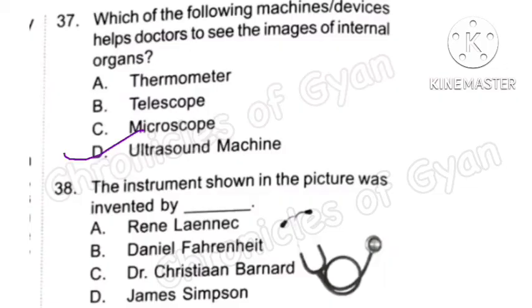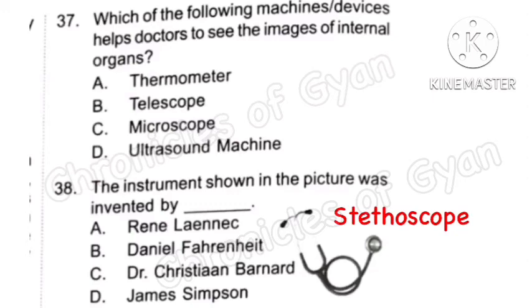Question 38: The instrument shown in the picture was invented by dash. This stethoscope was invented by Option A, René Laennec.